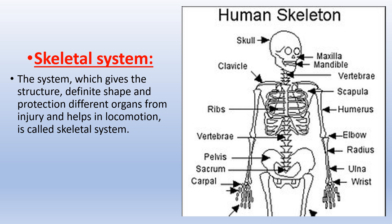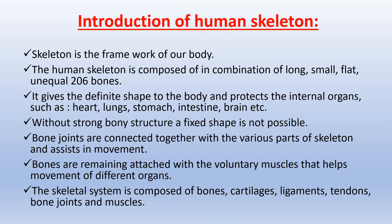You can see a labeled diagram of the human skeleton. Skeleton is the framework of our body. The human skeleton is composed of a combination of long, small, flat, and unequal 206 bones. It gives a definite shape to the body and protects the internal organs such as heart, lungs, stomach, intestine, brain, etc. Without a strong bone structure, a fixed shape is not possible. Bone joints are connected together with various parts of the skeleton and assist in movement. Bones remain attached with voluntary muscles that help movement of different organs. The skeletal system is composed of bones, cartilages, ligaments, tendons, bone joints, and muscles.